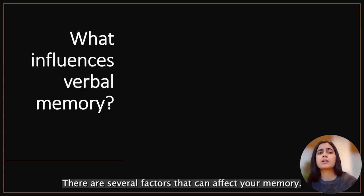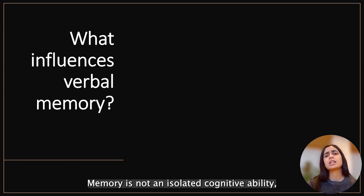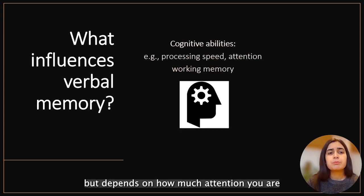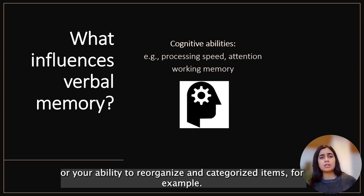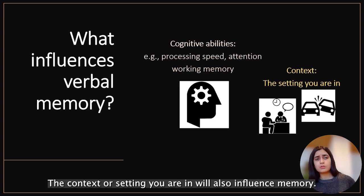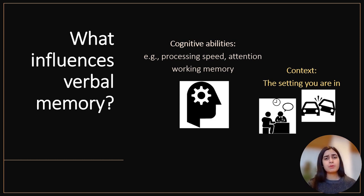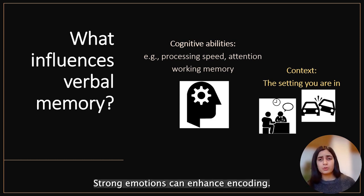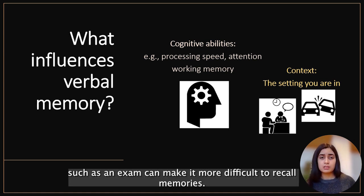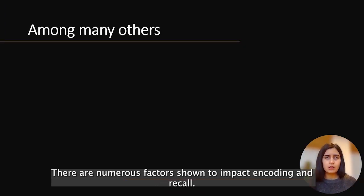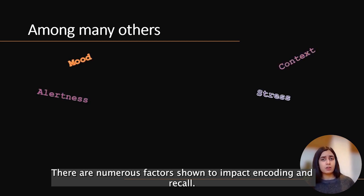There are several factors that can affect your memory. Memory is not an isolated cognitive ability, but depends on how much attention you are deploying to the task, how fast you can process the information, or your ability to reorganize and categorize items. The context or setting you are in will also influence memory. Strong emotions can enhance encoding — for example, in a car crash — while a stressful setting such as an exam can make it more difficult to recall memories.